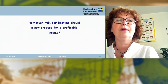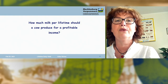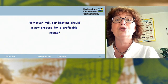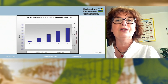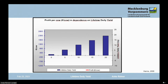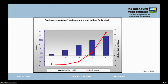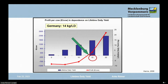So how much milk per lifetime should a cow produce for a profitable income? Definitely more than 12 kilograms. We classified all 43,000 cows into classes of lifetime daily yield and estimated cost and income. The break-even point was at 14 kilograms per day of lifetime. Farms in Germany are currently at 14 kilograms on average. If they would like to be efficient in future, they should reach 15, or better 20, kilograms per daily lifetime.